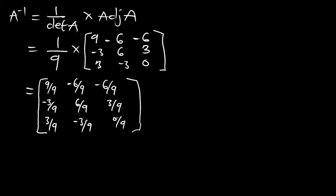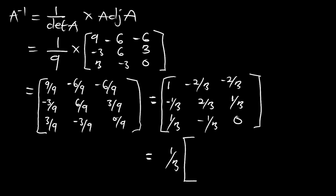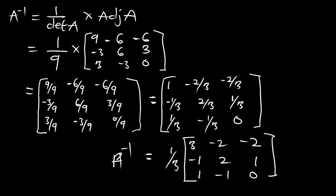This is what we get for the matrix, and you can further reduce it. That gives us: 1, negative 2/3, negative 2/3; negative 1/3, 2/3, 1/3; 1/3, negative 1/3, and 0. This is the inverse matrix. You can further factor out 1/3 to write it as 1/3 multiplying the matrix: 3, negative 2, negative 2; negative 1, 2, 1; 1, negative 1, and 0. This is the inverse of A using the formula.